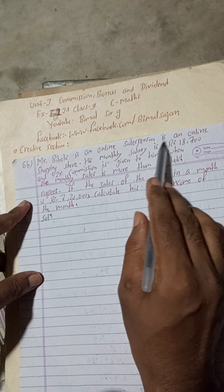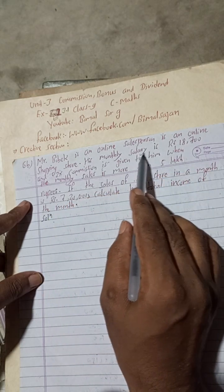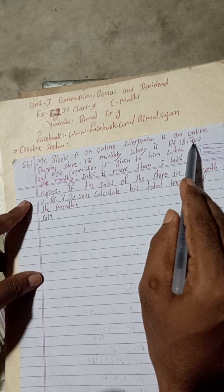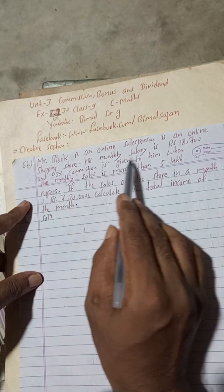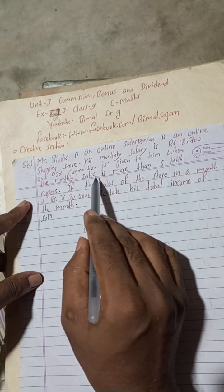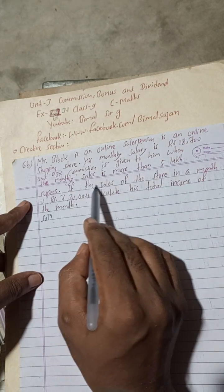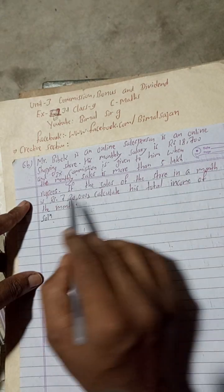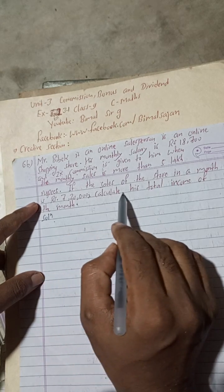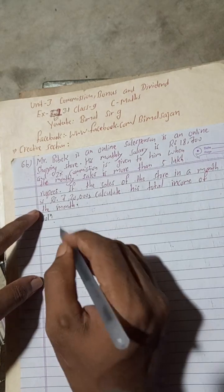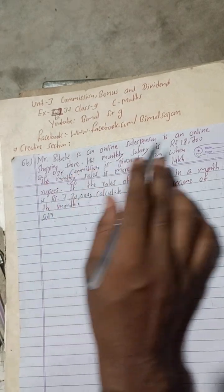Mr. Vivek is an online salesperson in an online shopping store. His monthly salary is Rs 18,700 and 2% commission is given to him when the monthly sales is more than 5 lakh rupees. If the sales of the store in a month is Rs 7,20,000, calculate his total income of the month.